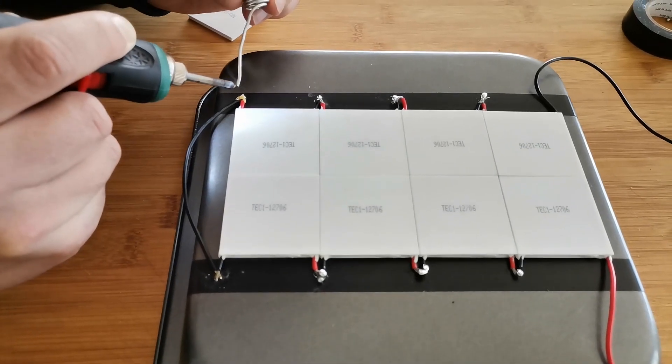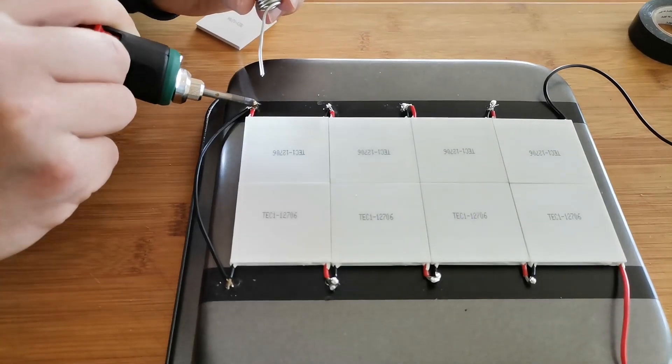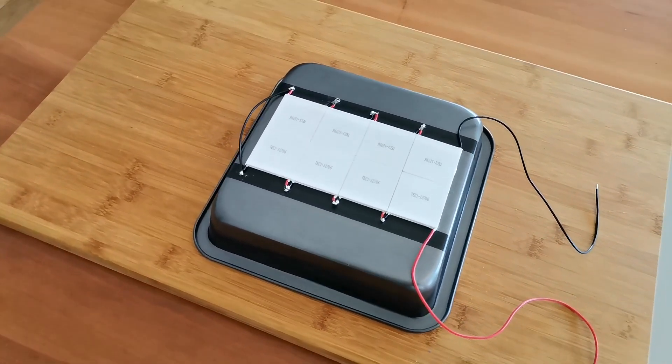When you reach one end, you need to complete the circuit by bridging it over to the other plate like so. At this stage, the thermoelectric generator should look like this.